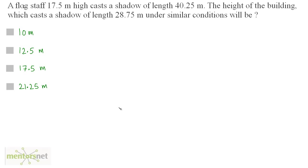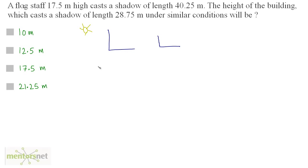We have two quantities: height and the length of shadow. Is height directly or inversely proportional to shadow length? If we imagine the sun and a pole, the shadow it casts is approximately the same as its height. If the pole is of shorter height, the shadow will also be shorter. Hence, height and the length of shadow are entities which are directly proportional to each other.